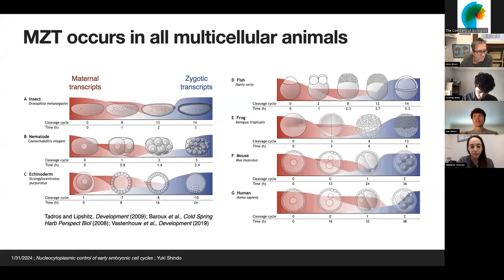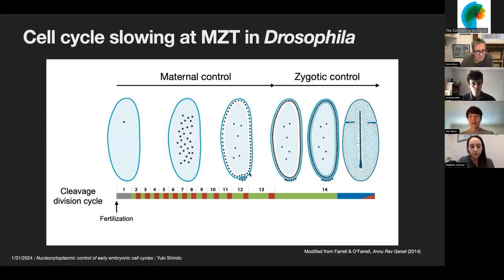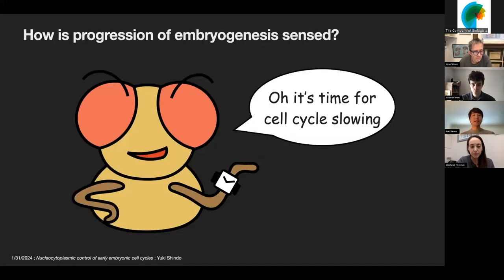We are trying to understand this outstanding question using Drosophila embryos as a model. Drosophila embryos undergo 13 rounds of divisions before MZT. One of the remarkable phenotypes we want to focus on is cell cycle slowing, where you have dramatic lengthening of cell cycle durations from as short as 10 minutes to more than an hour. The question is how the progression of embryogenesis is sensed to trigger cell cycle slowing at the right time.